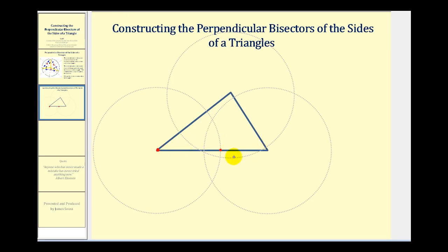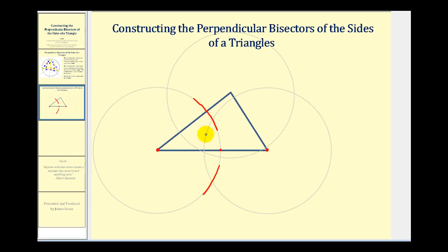Now if we want to bisect this side of the triangle, we'll swing an arc above and below this side with the point of the compass here. Our arcs might look something like this. Now leaving the radius of the compass the same, we'll put the point of the compass at the other endpoint and do the same — swing an arc above and below this side. It might look something like this. The perpendicular bisector will pass through the intersection points of these arcs. Notice how it forms a right angle with this side and it also cuts this side into two congruent segments.